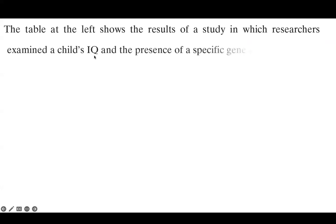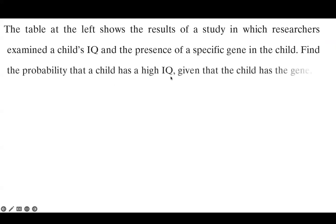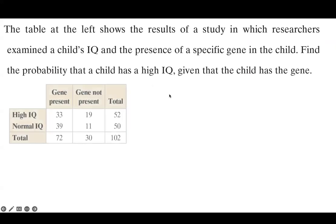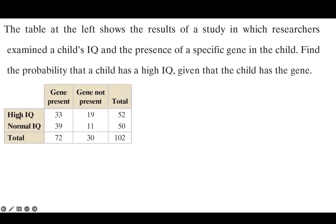Consider the following case. The table shows the result of a study in which researchers examined a child's IQ and the presence of a specific gene in that child. Find the probability that the child has a high IQ score given that the child has the gene. The table shows: high IQ with gene present — 33; high IQ, gene not present — 19; normal IQ with gene present — 39; normal IQ, gene not present — 11.